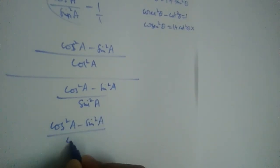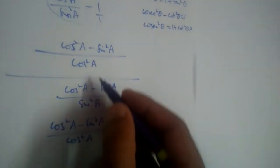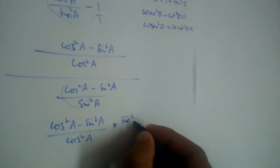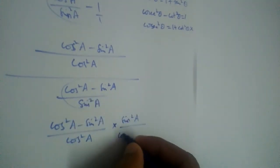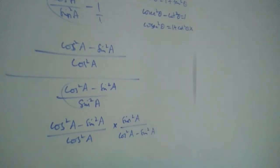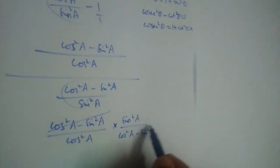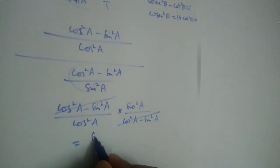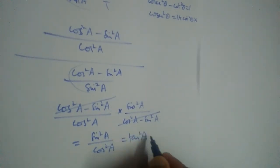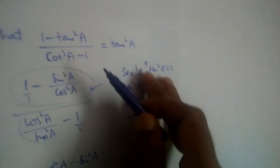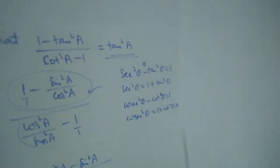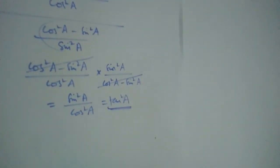When we have a division of division, this part becomes reciprocal and is multiplied: cos squared a times sin squared a divided by (cos squared a minus sin squared a). The cos squared a minus sin squared a terms cancel, leaving sin squared a divided by cos squared a, which equals tan squared a. So we have proved that (1 minus tan squared a) divided by (cot squared a minus 1) equals tan squared a.